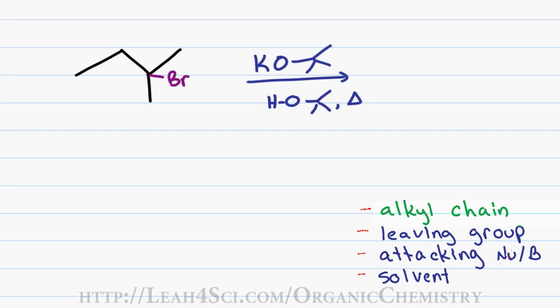First, we look at the alkyl chain, specifically the carbon holding the leaving group. In this case, we have a tertiary carbon, which means a one-type reaction can take place given that it will form a very stable carbocation. We can also have an E2 reaction because we're looking at the beta carbons, not the alpha carbon. But we rule out the SN2 reaction because you cannot have a direct nucleophilic substitution on a tertiary carbon because it's too hindered. We'll write no SN2.